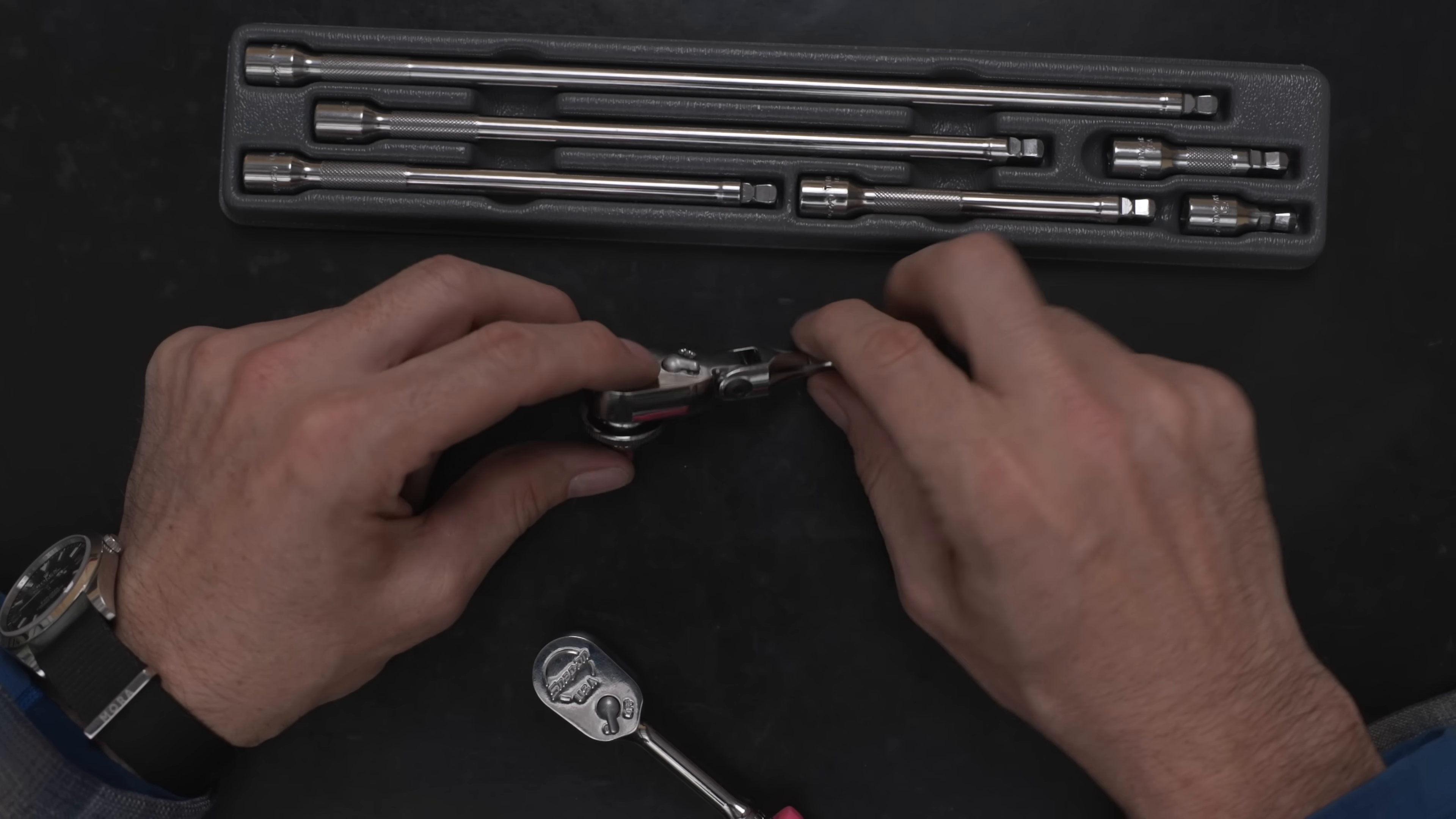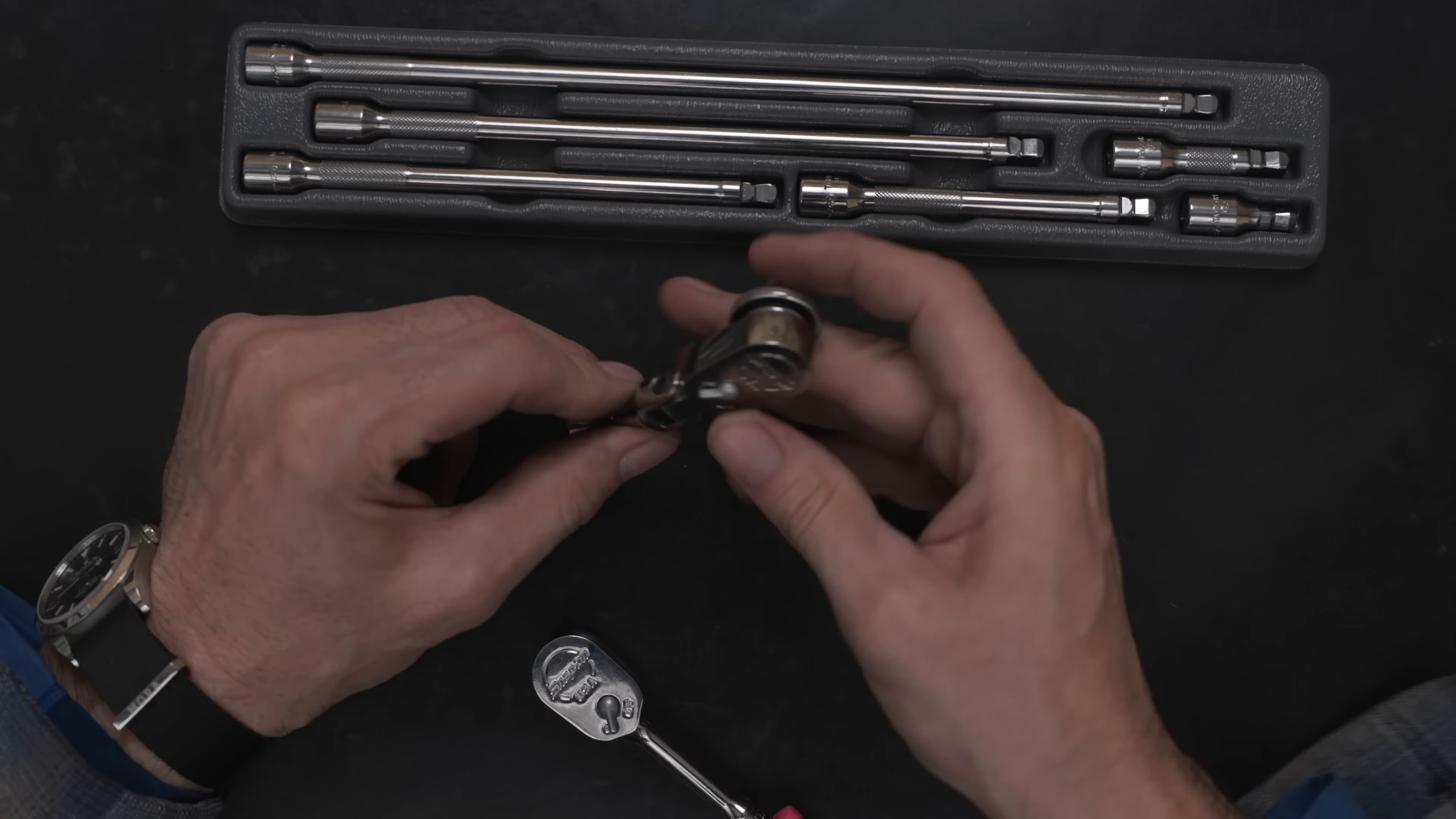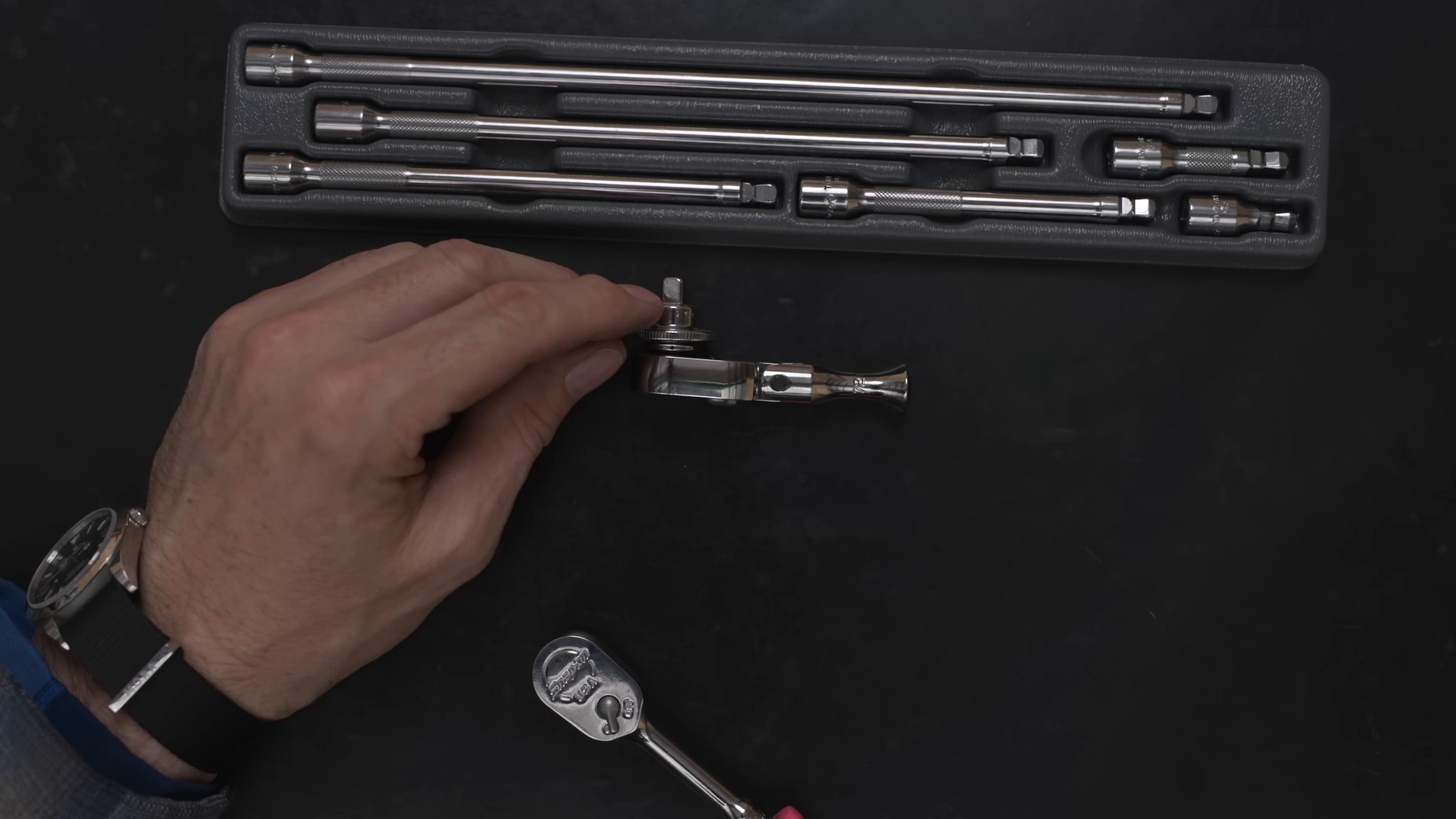They make one that's straight that doesn't have the articulating. I kind of agonized over which one would be best. And I think if you were going to have one, I think the articulating, because it's pretty stiff, it just gives you a few more options. You can even get in there and tighten things quickly with it. It is a handy little tool.